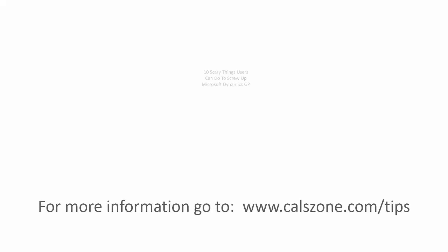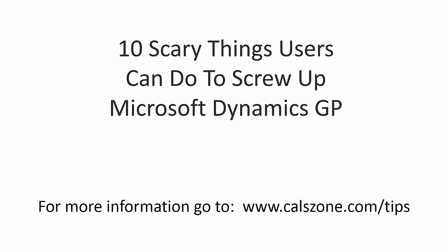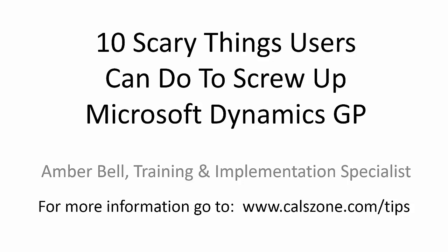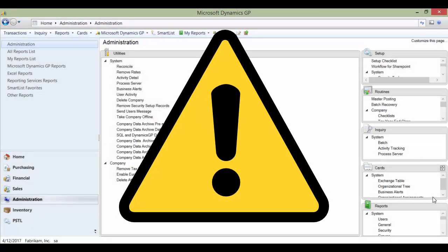This is Amber Bell from Cal Business Solutions. Today's topic is 10 scary things users can do to screw up Dynamics GP. Warning — the following video may be too intense for some viewers. It contains graphic examples of Dynamics GP user mistakes that have cost companies thousands of dollars to repair.